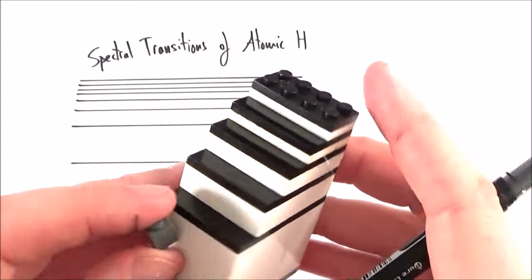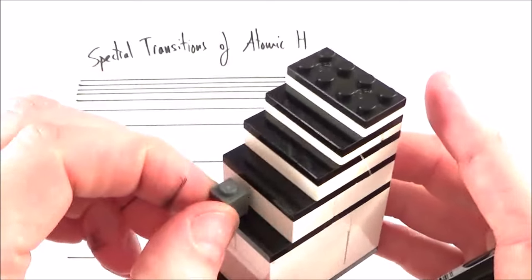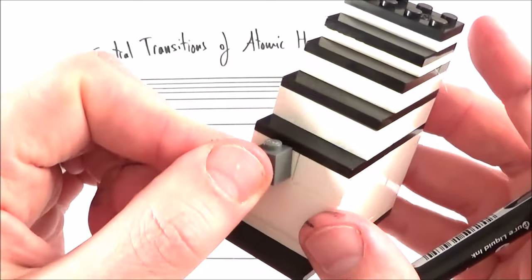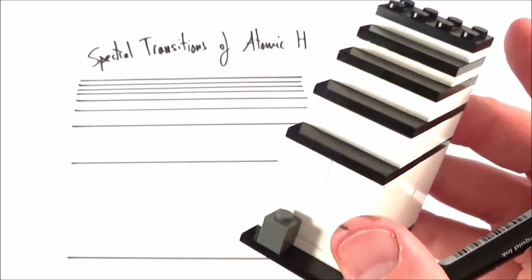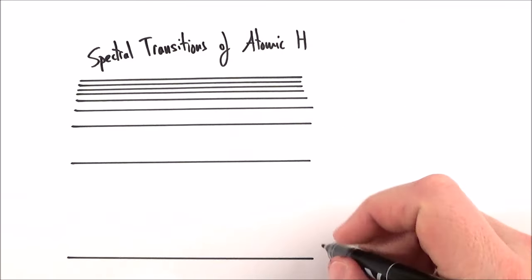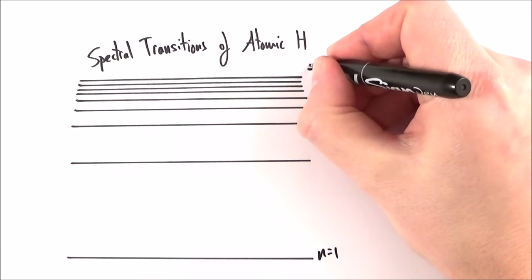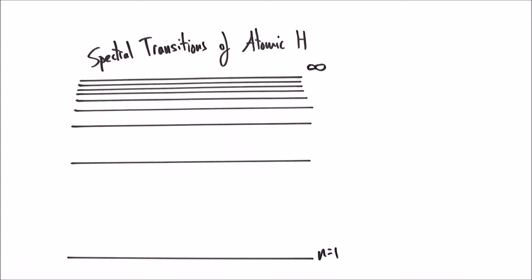In the last video we looked at how electrons can only exist at certain discrete energy levels within the atom. They can't exist beneath a level, they just fall down to the shell below. What we have here is the spectral transitions for atomic hydrogen. We can go from the ground state where n equals 1 right up to the electrons basically escaping the atom and making it an ion.